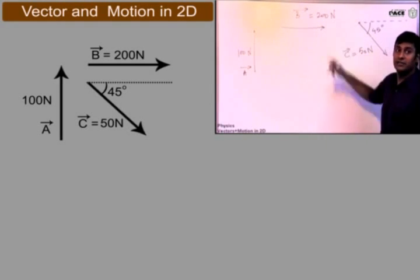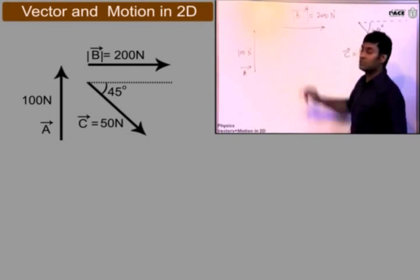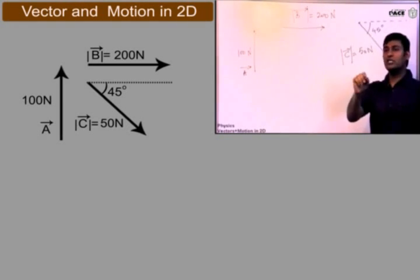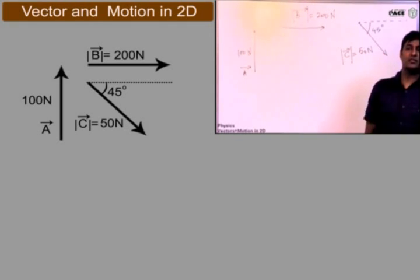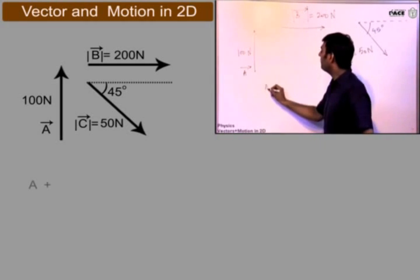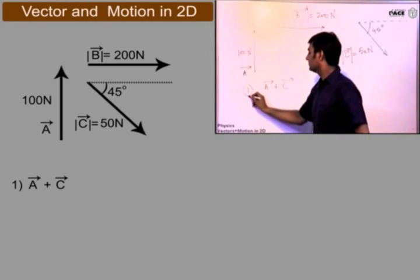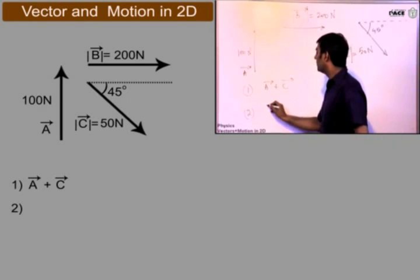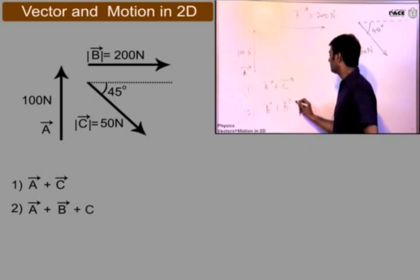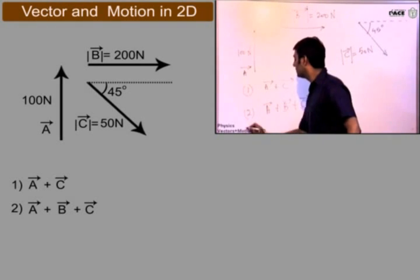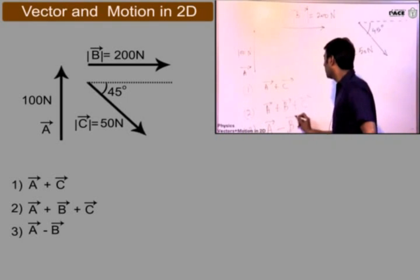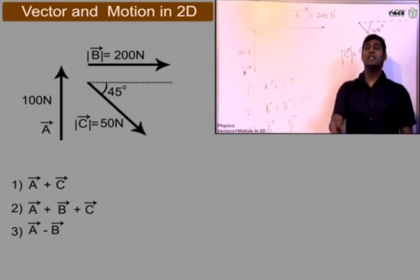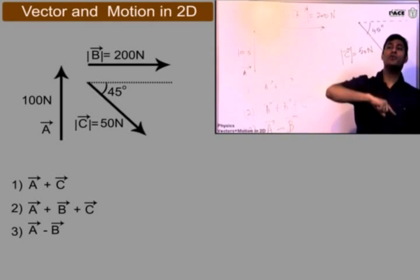Check: is the magnitude of B written correctly? Be attentive and point it out. Now, all of you just have to draw the diagrams — no calculations, no answers needed. Draw the diagram for: first, A plus C; second, A plus B plus C; and third, A minus B. Let's see how many of you are intelligent. Draw graphically, draw an arrow, and show me the resultant.